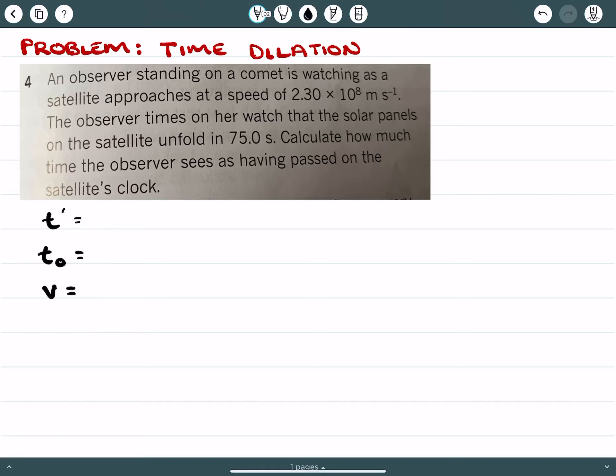Now the velocity of the satellite, that's quite easy to find out. So here we have it here, 2.3 × 10^8 meters per second.